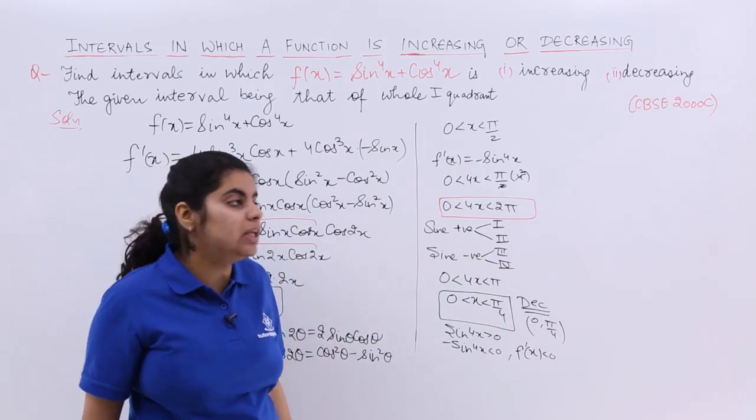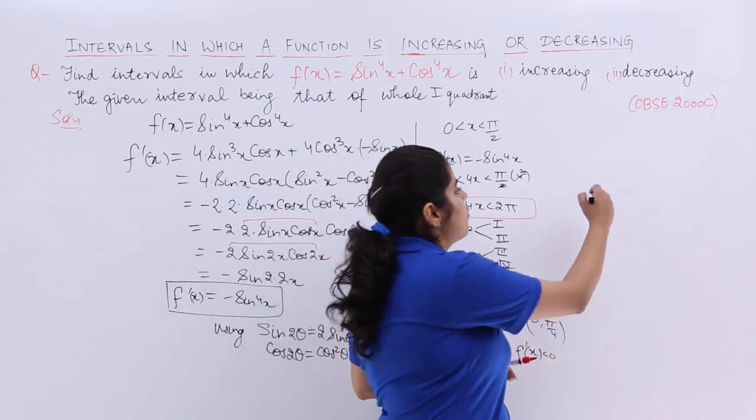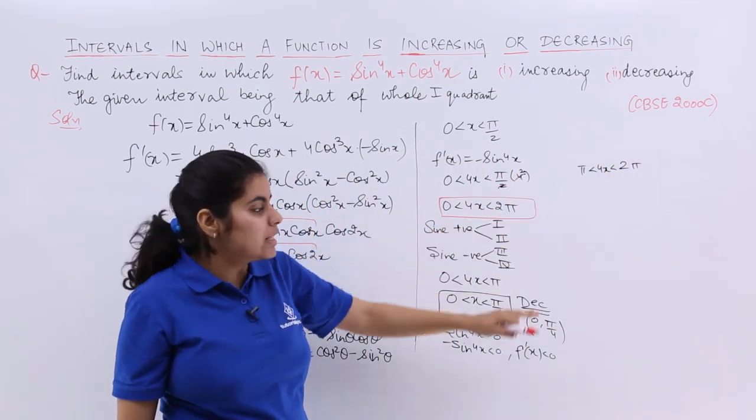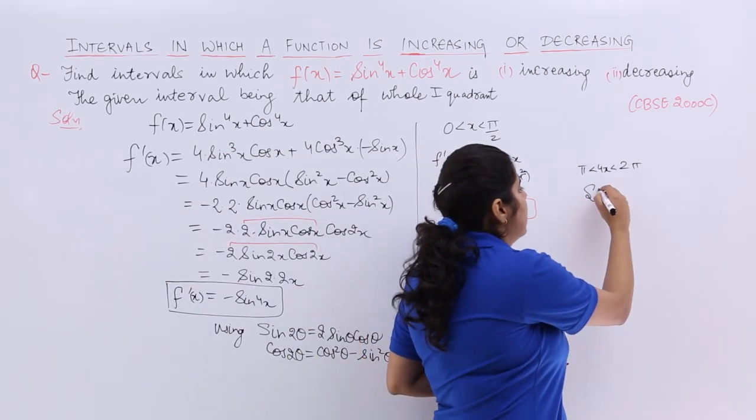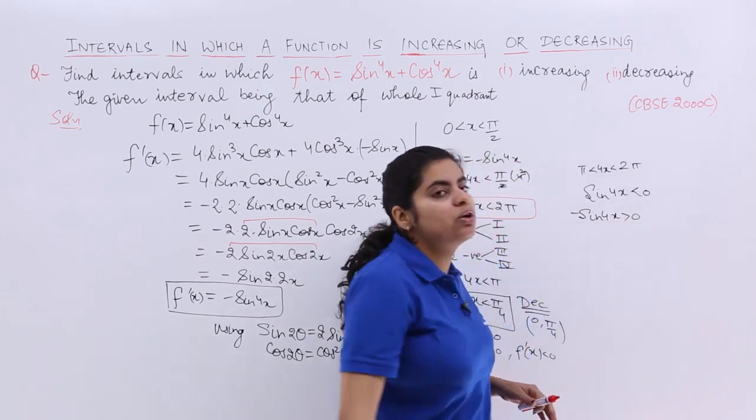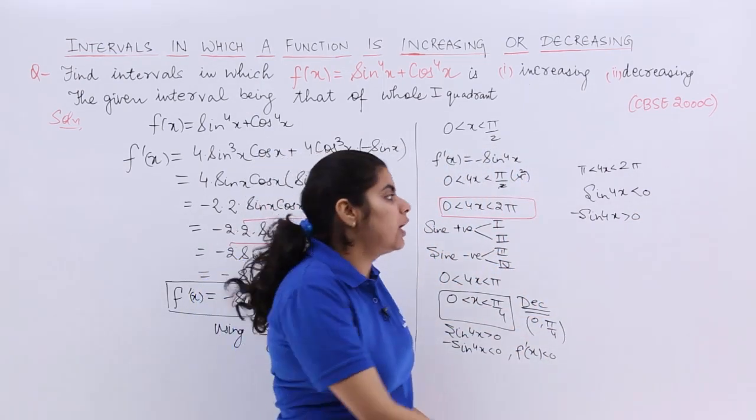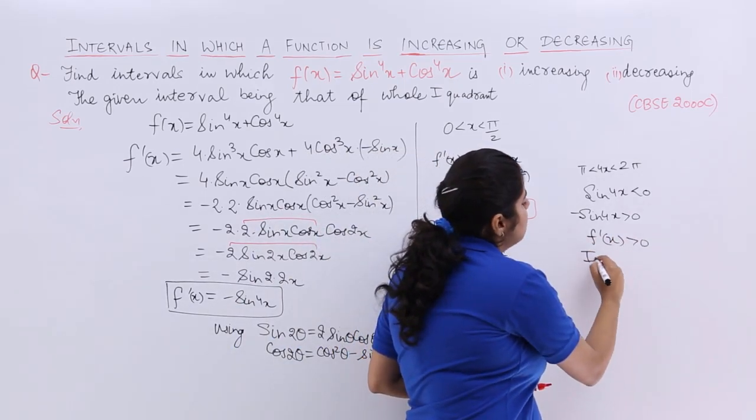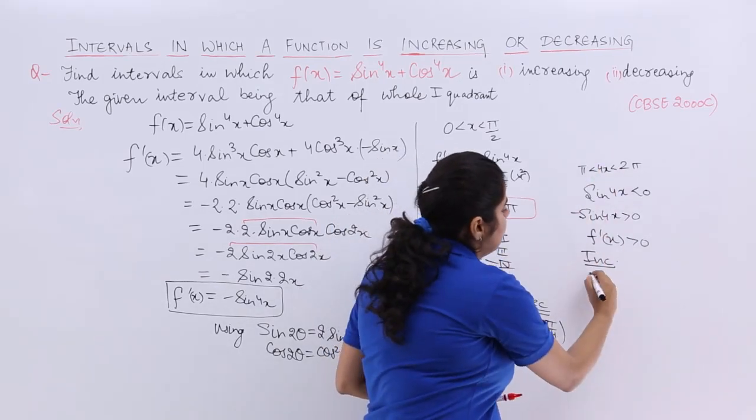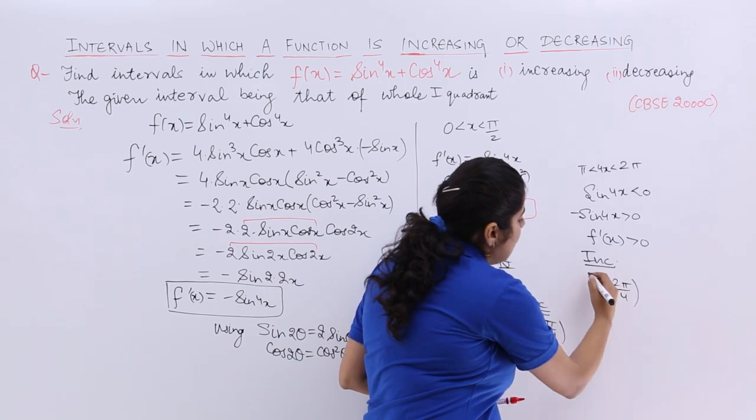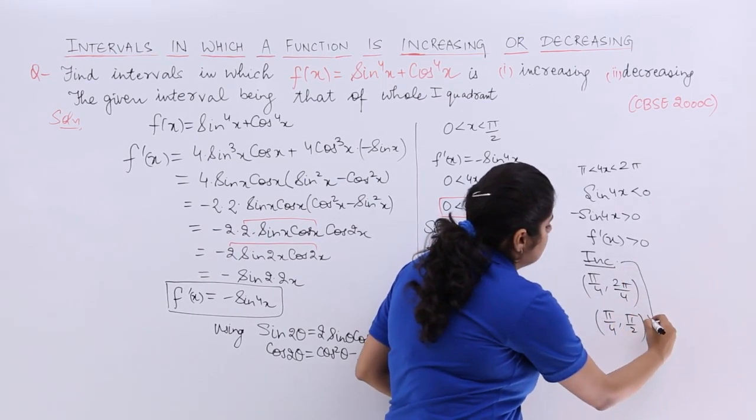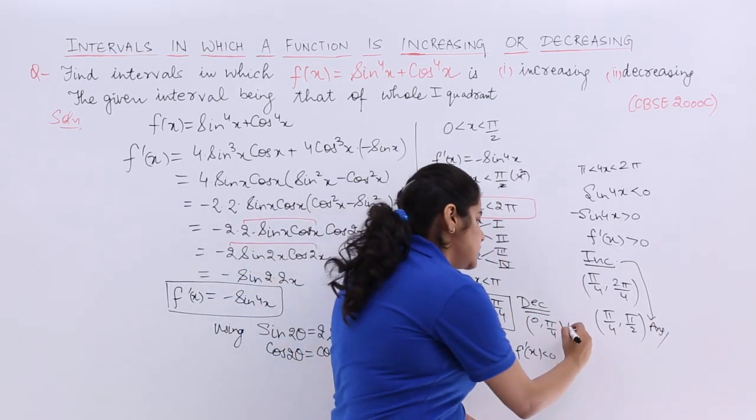Similarly, after you've done decreasing, you can find increasing. For increasing, I have π to 2π for 4x. I have sin(4x) < 0 because sin is negative in 3rd and 4th quadrants. That means -sin(4x) > 0. When -sin(4x) > 0, f'(x) > 0, which is increasing function. What is the interval? Take 4 to the other side: π/4 to 2π/4, which is π/4 to π/2. That's the answer for increasing, and 0 to π/4 for decreasing.